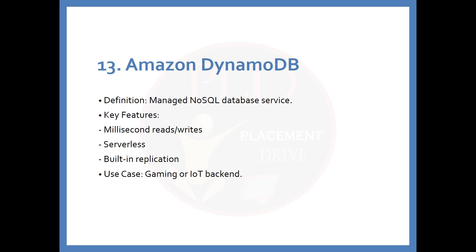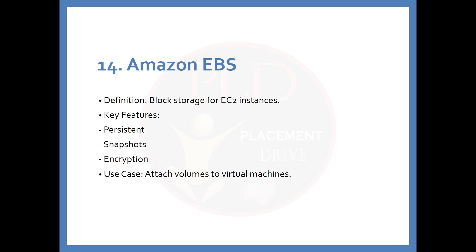The 13th service is Amazon DynamoDB. The definition is: a managed NoSQL database service. Key features include millisecond read/write performance, serverless operation, and built-in replication. The use case is gaming or IoT backends. The 14th service is Amazon EBS. The definition is: block storage for EC2 instances. Key features include persistent storage, snapshot support, and encryption. The use case is attaching volumes to virtual machines.